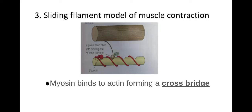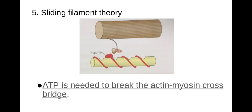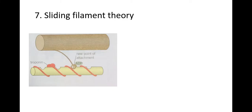Cross-bridge — anything underlined here is a keyword taken directly from the mark schemes. Once the cross-bridge forms between actin and myosin, the myosin head tilts and this is known as the power stroke. This pulls the sarcomere closer together, shortening it, and this is part of the contraction. ATP is needed to break the actin-myosin cross-bridge so that the myosin head can return to its original position and then bind to the next point on the actin.